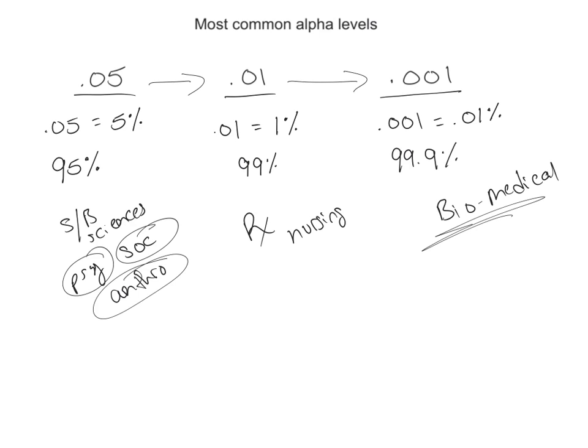So again, most common alpha levels, you're going to have 0.05, 0.01, and 0.001. And again, alpha kind of looks like that. So this would be alpha equals 0.05. This would be alpha equals 0.01, and then this would be alpha equals 0.001.